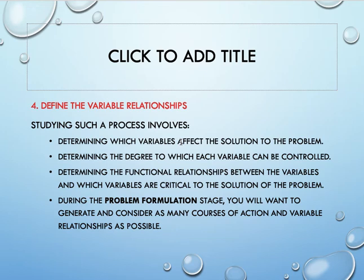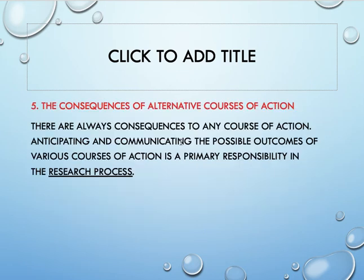During the problem formulation stage, generate and consider as many courses of action and variable relationships as possible. You need to define the process — which variables are involved at which step. Fifth, consider the consequences of alternative courses of action. There are always consequences to any course of action. Anticipating and communicating the possible outcomes of the various courses of action is a primary responsibility in the research process. For example, if you are trying to solve a problem using a certain method and suddenly that method cannot be processed due to some technical problem, you need to find an alternative. Every action that we take must have consequences, and you must be prepared for that.